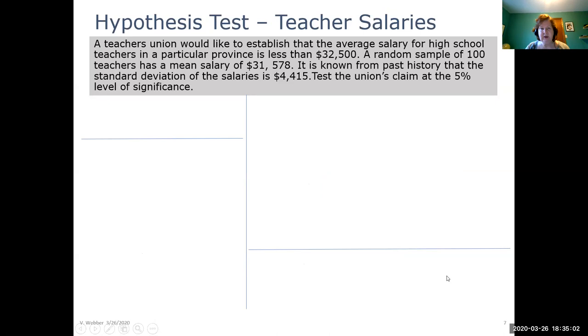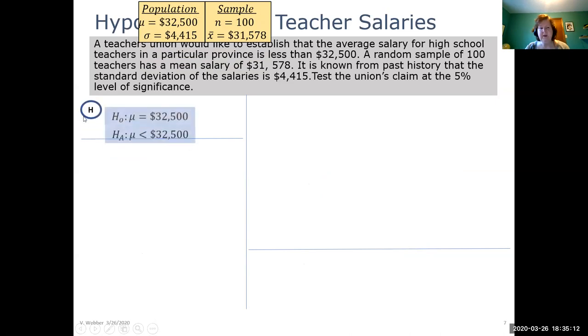Let's go ahead now and solve this problem. There's our population and sample information at the top for easy reference. Let's formulate our hypotheses. Currently, the null hypothesis states that the mean salary is $32,500. The union wants to show that it's actually less than that. So the test we're doing is that mu is actually less than $32,500.